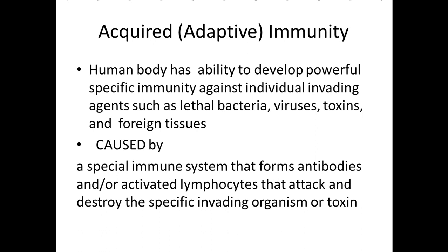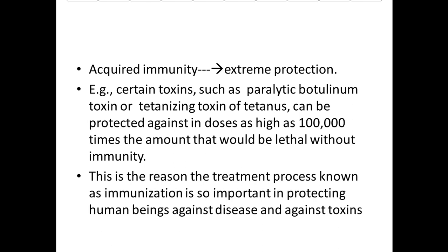Acquired immunity is caused by a special immune system that forms antibodies and/or activated lymphocytes that attack and destroy the specific invading organism or toxin. It provides extreme protection — for example, certain toxins such as botulinum toxin or tetanizing toxin of tetanus can be protected against in doses as high as one hundred thousand times the amount that would be lethal without immunity.